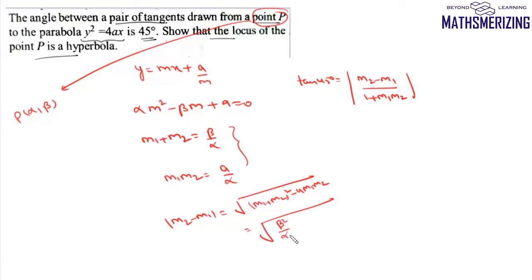We'll put these values: tan 45° = 1 = √(β² - 4aα)/α divided by (1 + m₁m₂), where m₁m₂ = a/α.